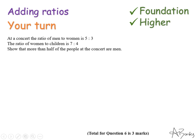Here's a question for you to try. This is talking about men, women and children that go to a concert. And it wants you to show that more than half of the people at the concert are men. So focus first on adding these two ratios together to get a ratio of men to women to children. And then see if you can show that more than half the people at the concert are men. If you pause the video, you can give it a go and then unpause when you're ready to see the solution.